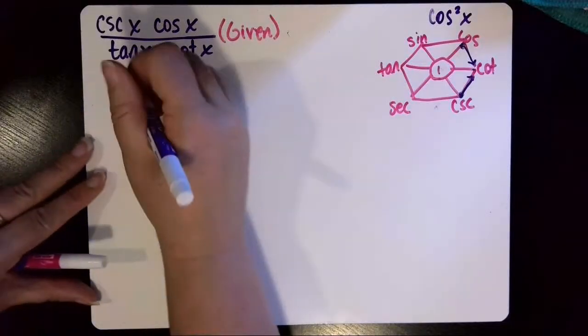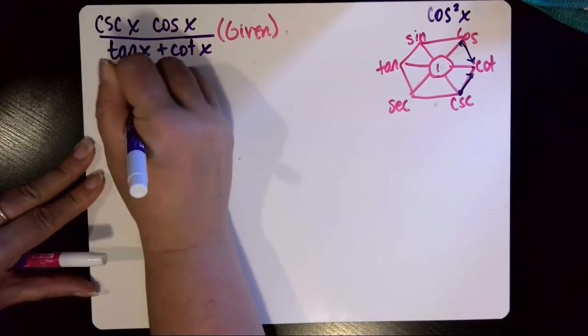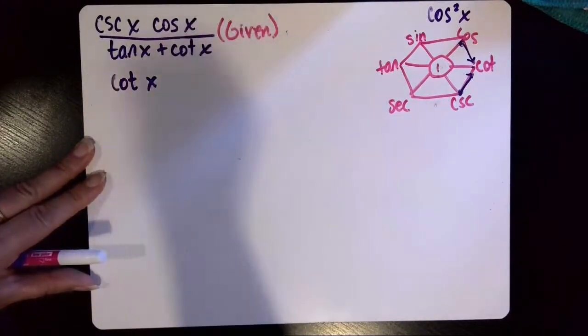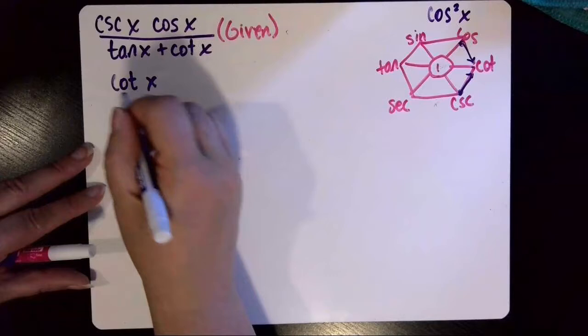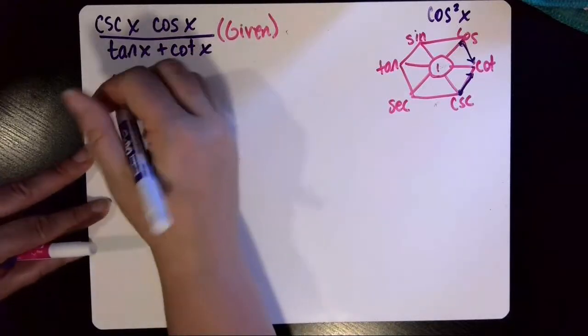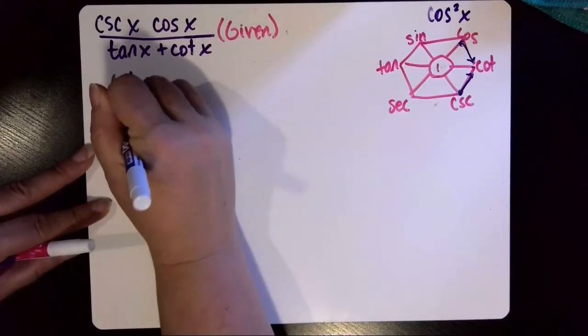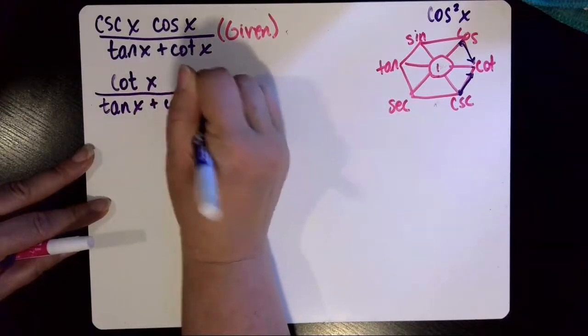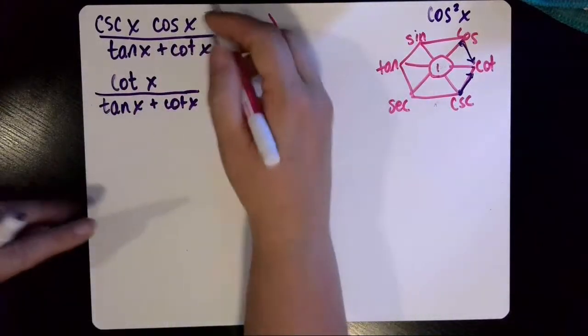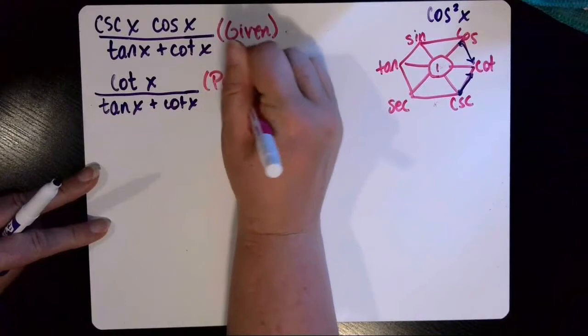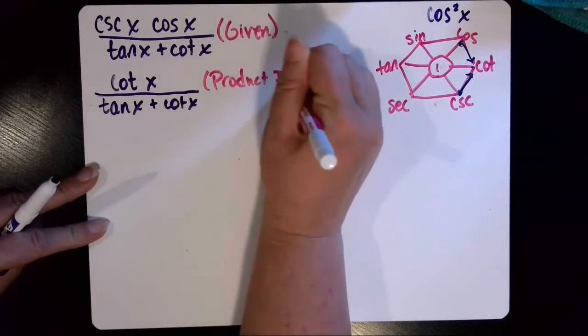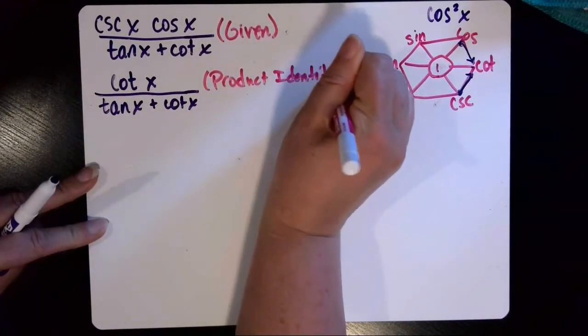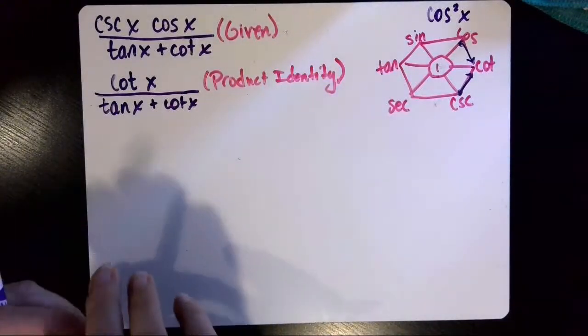So the cotangent of x can replace the cosecant times the cosine because of that product identity. And that would be still divided by the tangent of x plus the cotangent of x. And that would be applying a product identity. Okay, and that's step number two.